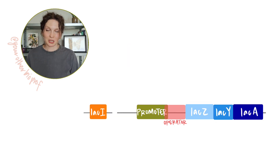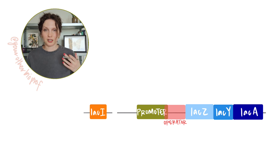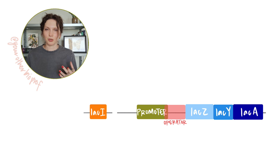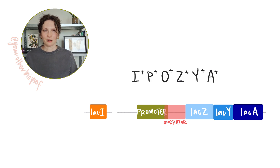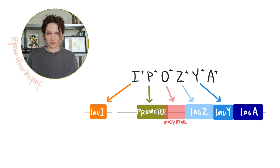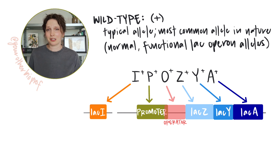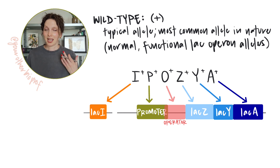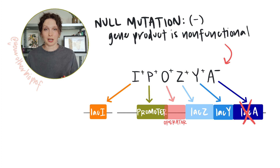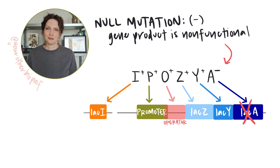Now we're ready to see how mutations impact expression of the lac operon genes, but first a little housekeeping. Here we've got the lac operon and its regulatory sequences, which should look familiar. When working problems with lac operon mutations, you'll see the components written out in order: I, P, O, Z, Y, A. Plus signs indicate wild type alleles — typical alleles with normal functionality. A minus sign indicates a null allele or loss of function allele. Other mutations are indicated with a letter in superscript, and we'll see a few examples of those as well.